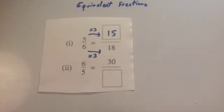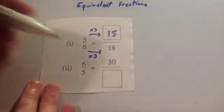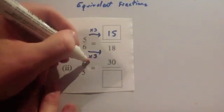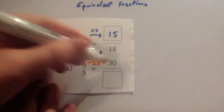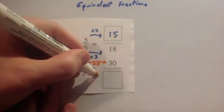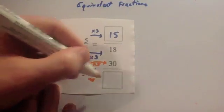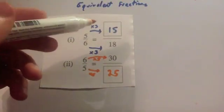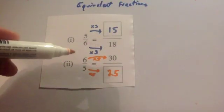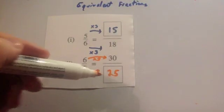Let's look at the next one. So you've got 6 over 5 equals 30 over blank and you've got to work out what the denominator would be. So to get from 6 to 30, you would times by 5. 6 times 5 is 30. So you need to times the bottom number by 5 as well. And 5 times 5 is 25. So 5 sixths is the same as 15 eighteenths and 6 fifths is the same as 30 twenty-fifths.